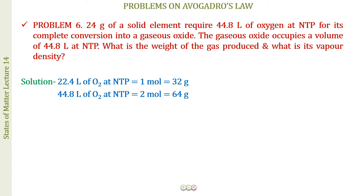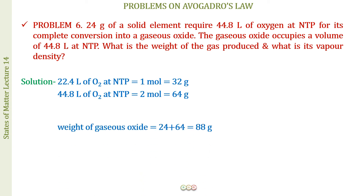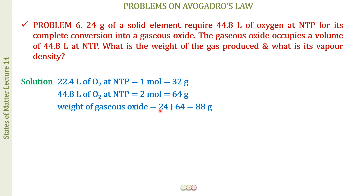So 24 g of the solid element combines with 64 g of oxygen to get completely converted into the gaseous oxide. The weight of the gaseous oxide = 24 + 64 = 88 g.